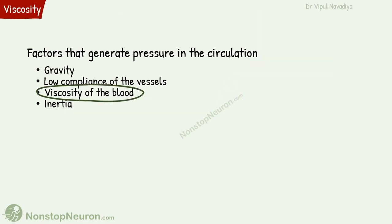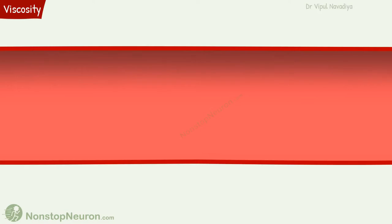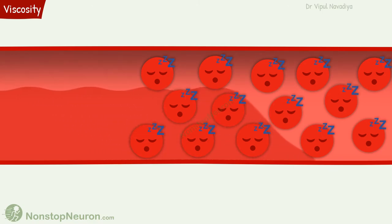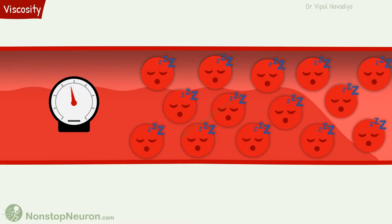The next factor is the viscosity of the blood. Viscosity in simple words is the resistance of a fluid to movement. When there is flow, the blood resists moving due to its viscosity, and this resistance generates pressure. The higher the viscosity, the higher the pressure.